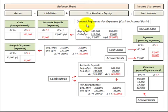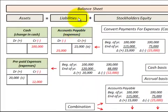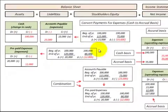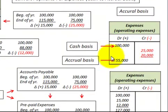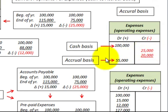To summarize: to convert payments for expenses from the cash basis to the accrual basis, we used accounts payable — a liability on the balance sheet — and prepaid expenses — an asset on the balance sheet. We determined the changes in accounts payable and prepaid expenses for the year, then balanced those changes against our expense account on the income statement. To get the accrual basis, we took the cash basis payments and netted them against any debits or credits for accounts payable and prepaid expenses to arrive at the net balance.